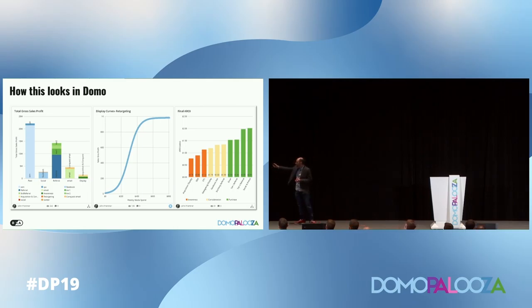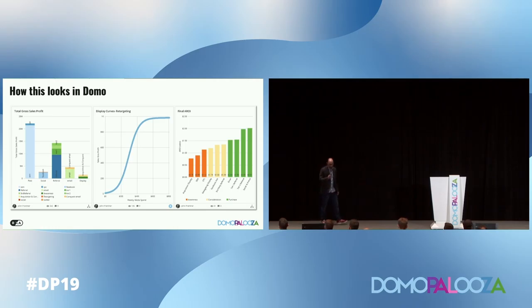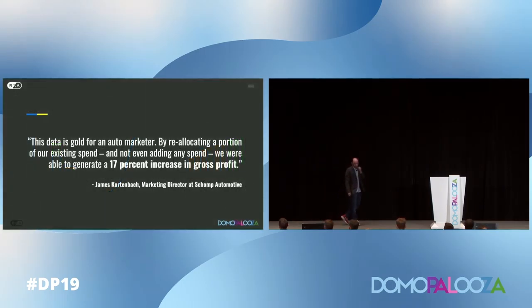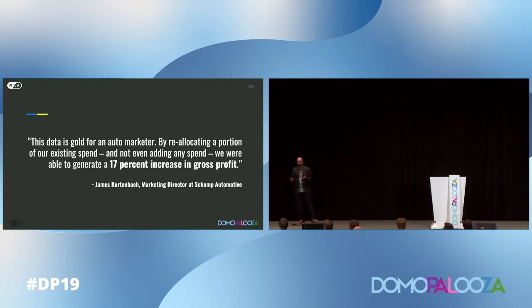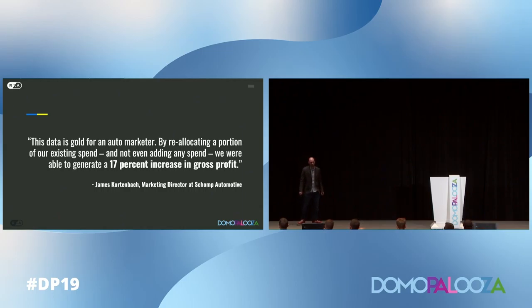On the purchase side, we can see that what they're doing in social and pre-roll is actually one of the most valuable things. One of the marketing managers at the dealer group said: 'This is great — we were able to take the data that we have, not spend more, but just tweak things and move things from one category to another. And that let us get a 17% increase in total gross profit.'